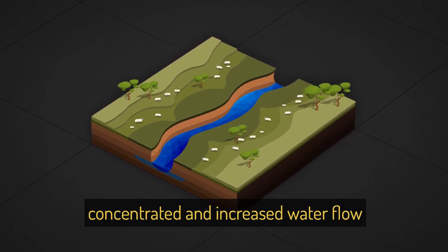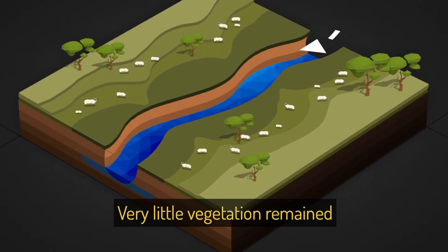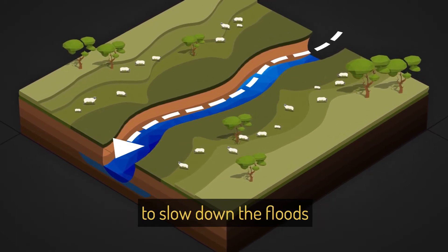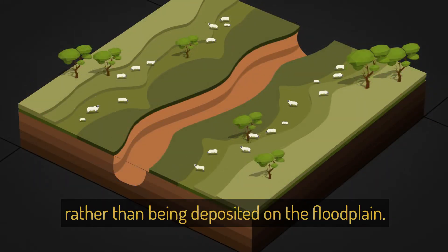The continuous channels concentrated and increased water flow. Very little vegetation remained to slow down the floods and more nutrients were lost downstream rather than being deposited on the floodplain.